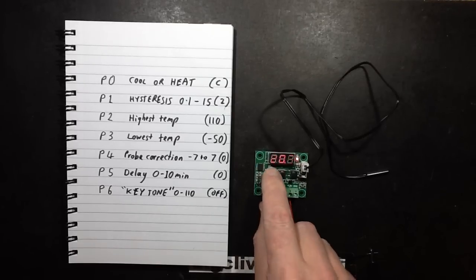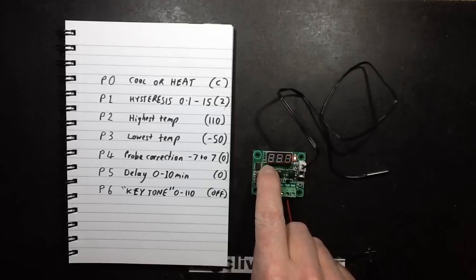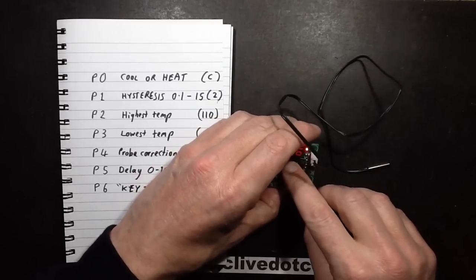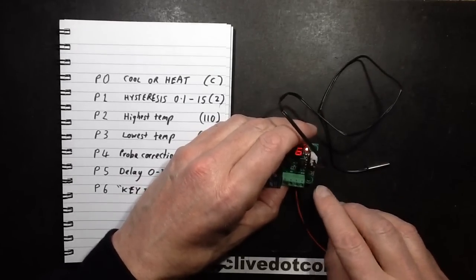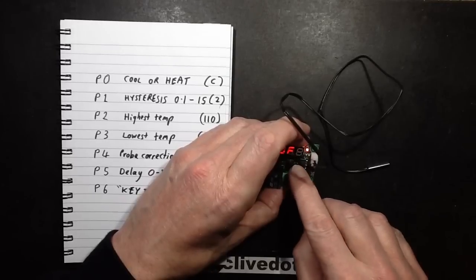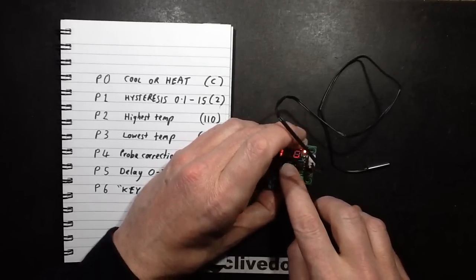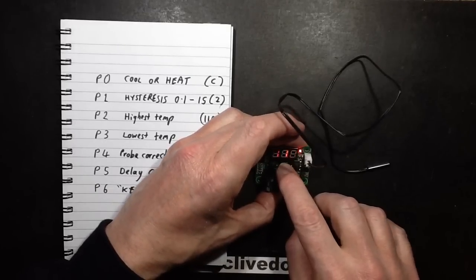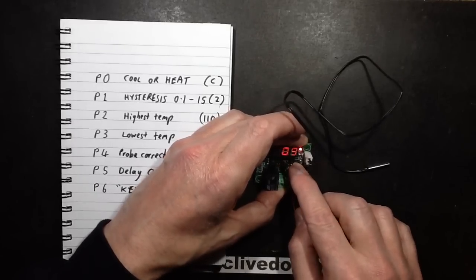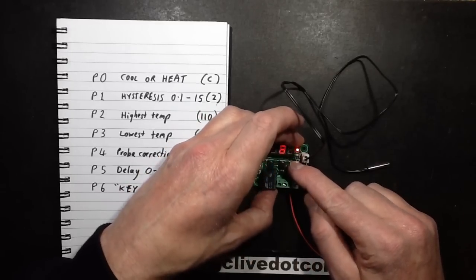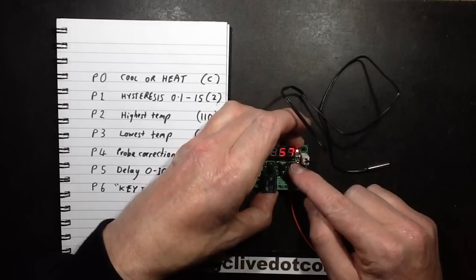Let me show you how to brick these controllers. So I'm putting it into the programming mode. I'm going to go to P6. I'm going to set it on. And then it's currently set to 110. I haven't a clue what this parameter is. I'm going to run it all the way down to zero. And it obviously didn't think about this happening in software. Because if you run it all the way down to zero.